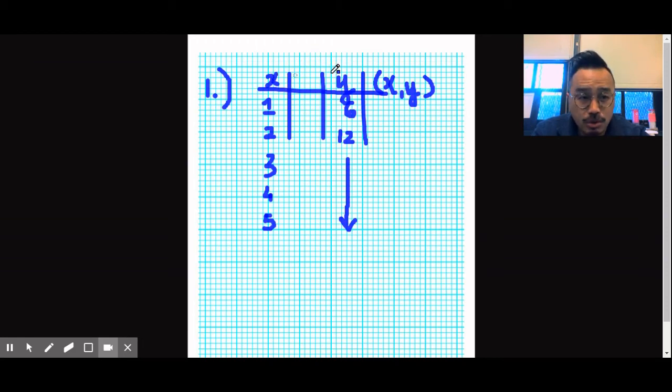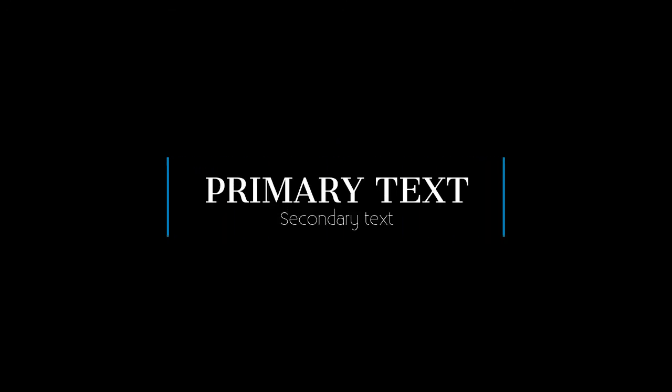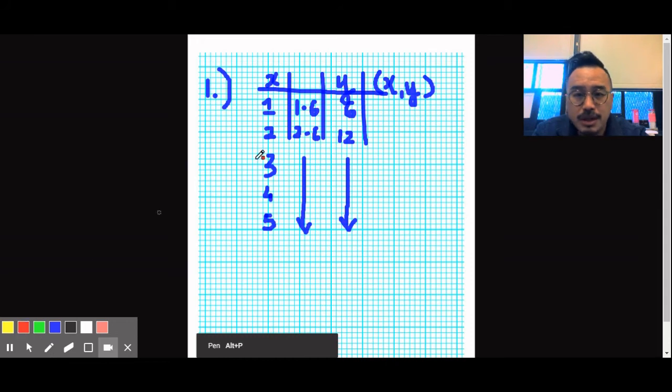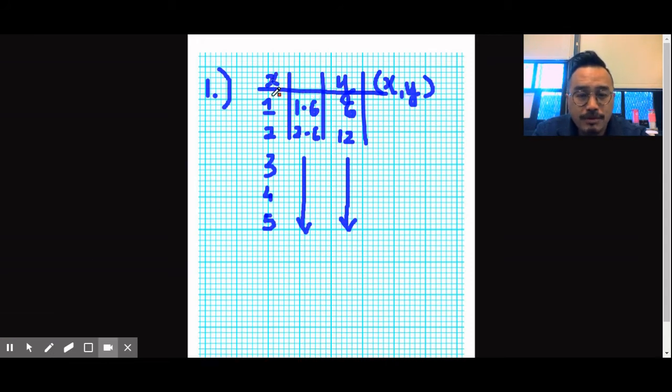What do you need to do to X, right, to the input, the independent variable, so that you get Y like that? So what needs to happen to one so you'll turn six? In other words, yeah, six times that number, right? So that means it's one times six. Likewise, two times six, and so on and so forth. So here, what is the rule then? Whatever X is, what do you do to it? Six times, right? So it's six times X. That's the rule.